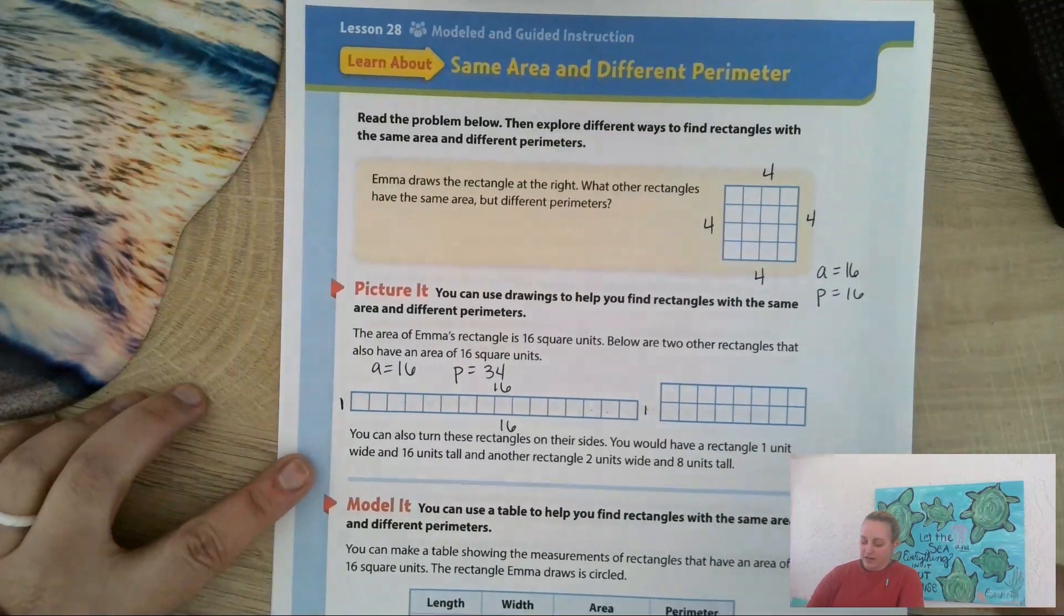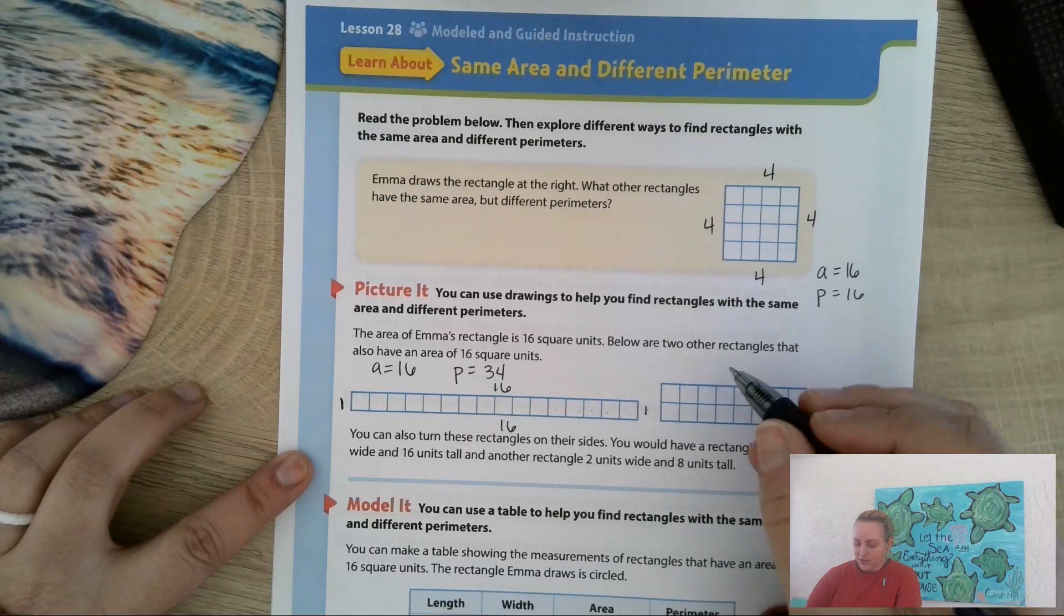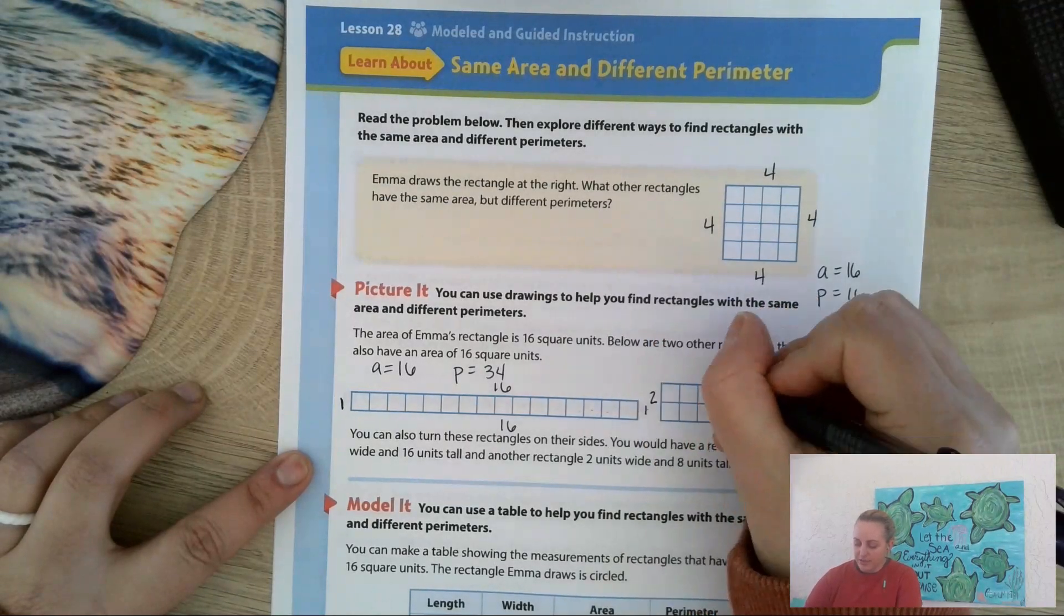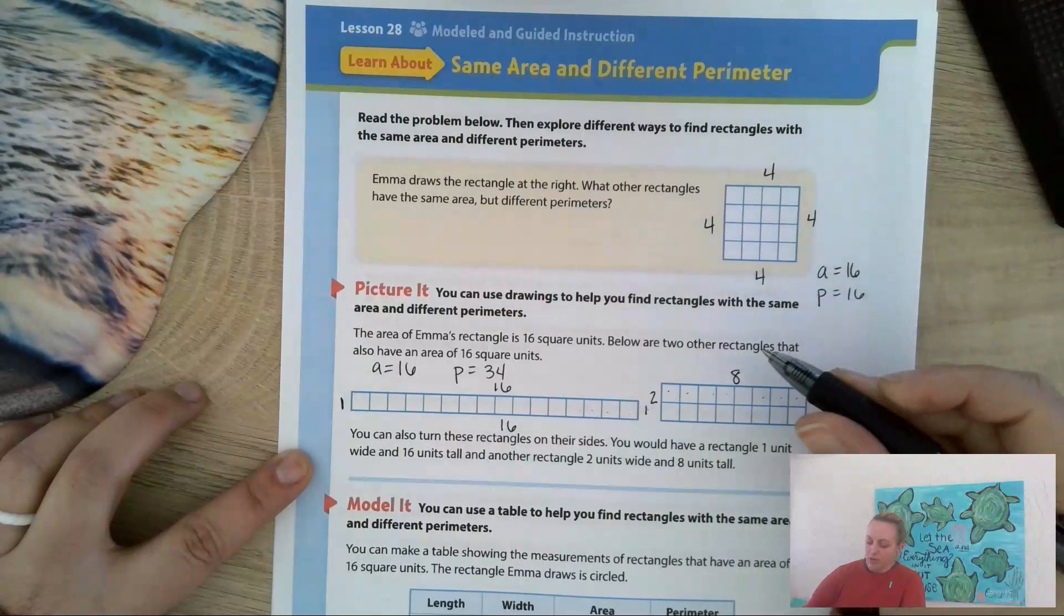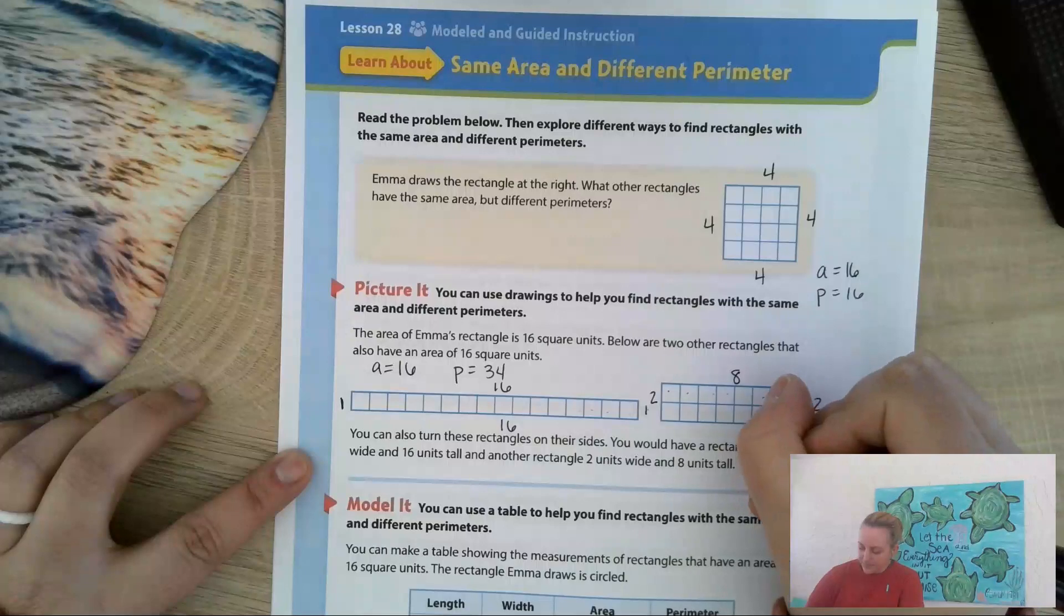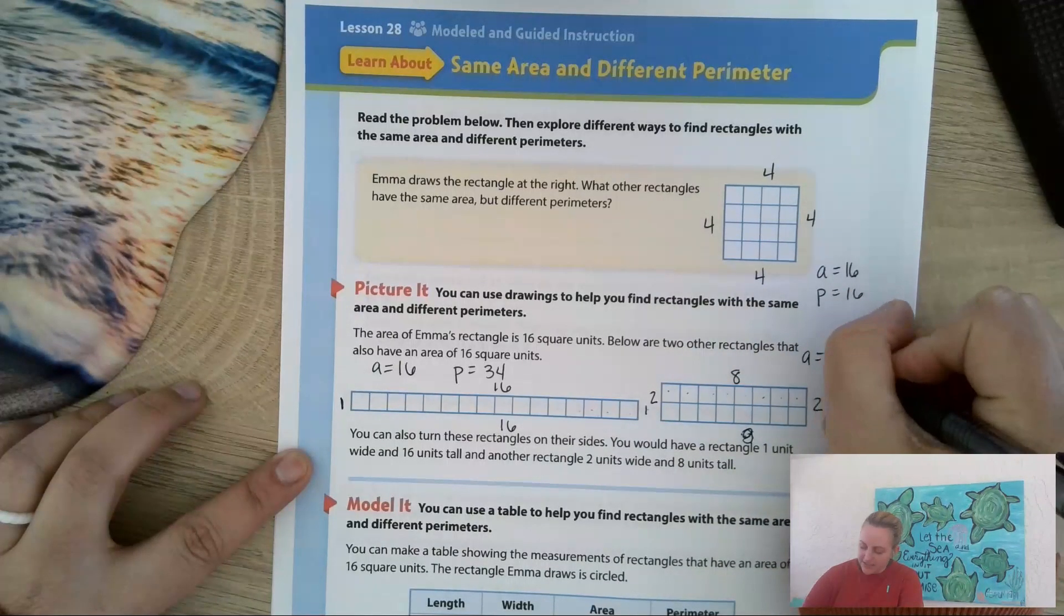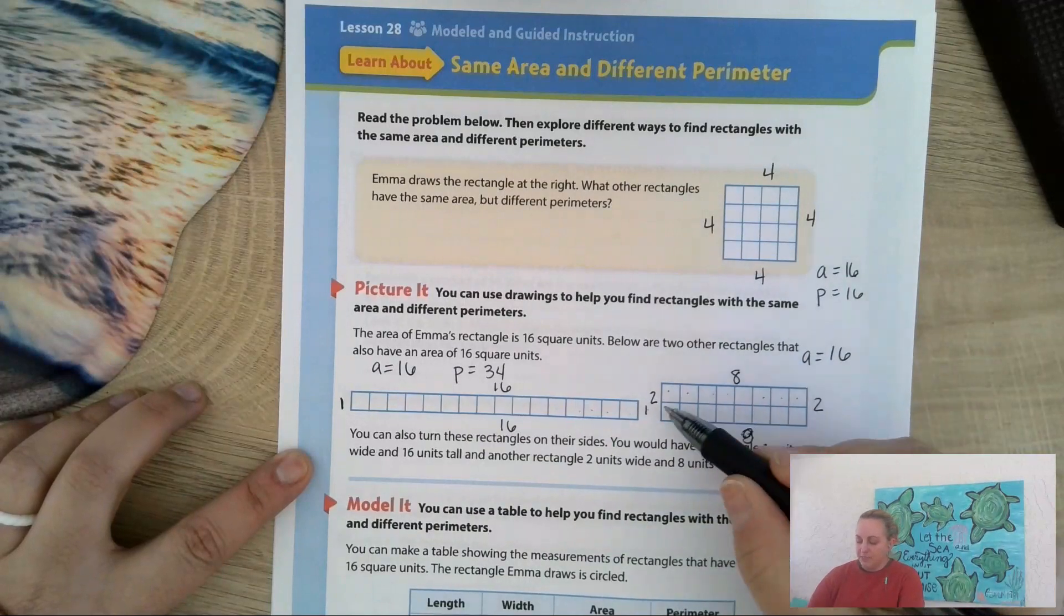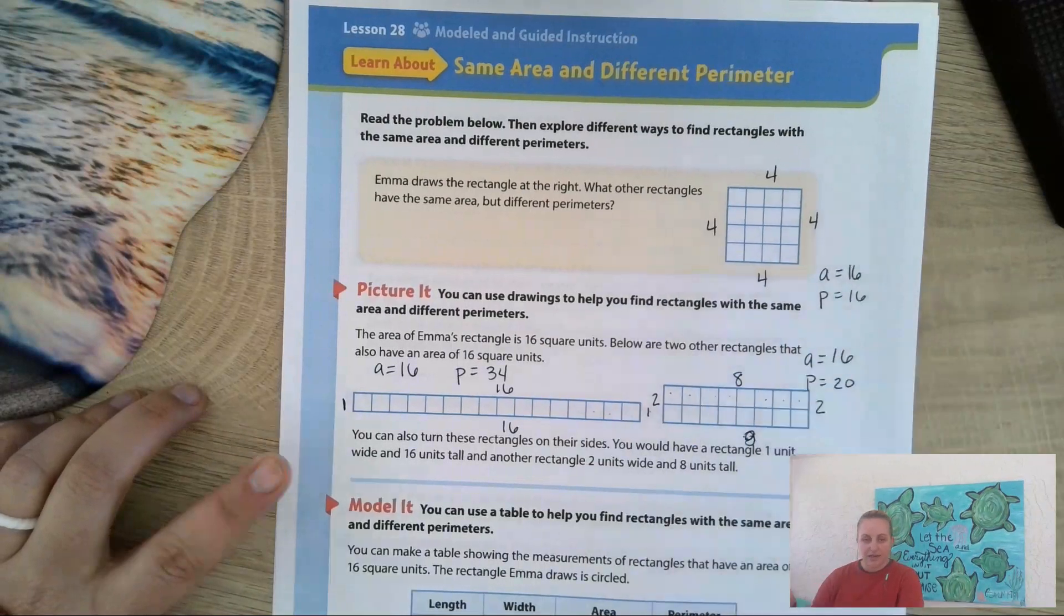Here I'm taking the 16 squares. I have two up and 1, 2, 3, 4, 5, 6, 7, 8. So 8 plus 2, the area is still 16. There's still 16 square units, but 8 plus 2 is 10. 8 plus 2 is 10. The perimeter equals 20.